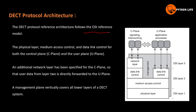This is the DECT protocol reference architecture based on the OSI reference model. It includes a physical layer, medium access control, and data link control. There are two planes: C plane (control plane) and user plane. An additional network layer exists for the C plane. The management plane is in a vertical position and vertically covers all lower layers of the DECT system.